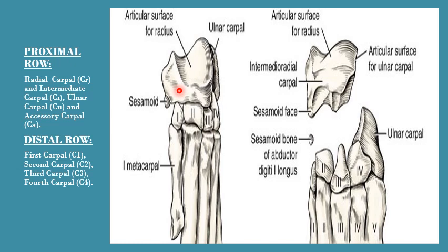In the proximal row, the first carpal bone is the radial carpal, which is at the medial aspect of the forelimb. Then laterally there is the ulnar carpal at the lateral aspect, and palmar or caudal to this ulnar carpal is the third bone known as the accessory carpal. These three — radial carpal, ulnar carpal, and accessory carpal — comprise the proximal row.